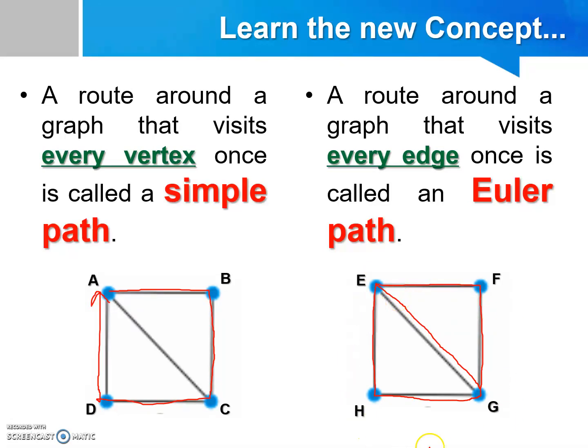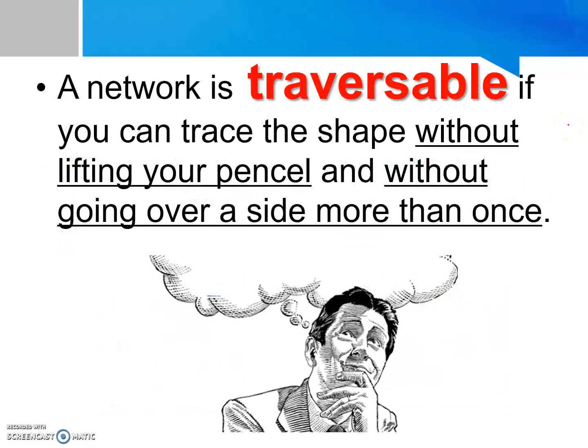Yes, this is called an Euler path because the route visits every edge only once. An Euler path can also be called a traversable network. It means that if you can trace a shape without lifting your pencil and without going over a side more than once, then we can say that the network is traversable, or it is an Euler path.